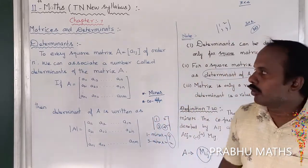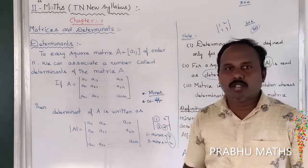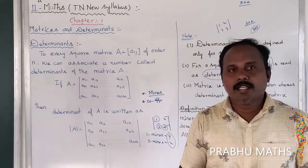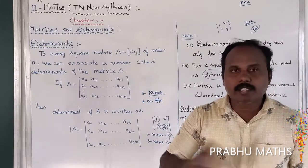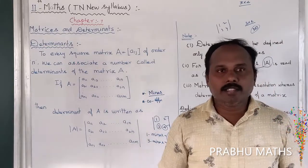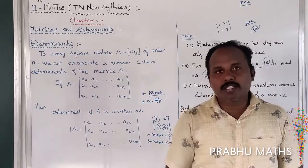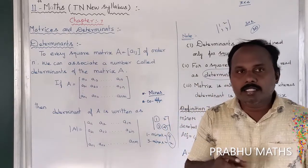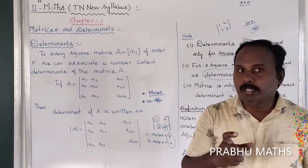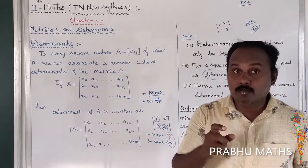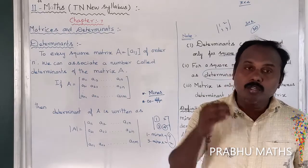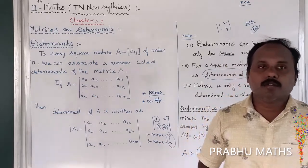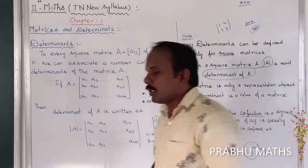So the simplest case is a square matrix. A square matrix has a determinant, and the determinant is a real-valued function. Each and every element should be evaluated for the determinant, and we can find the cofactor as well as the minor for each element.